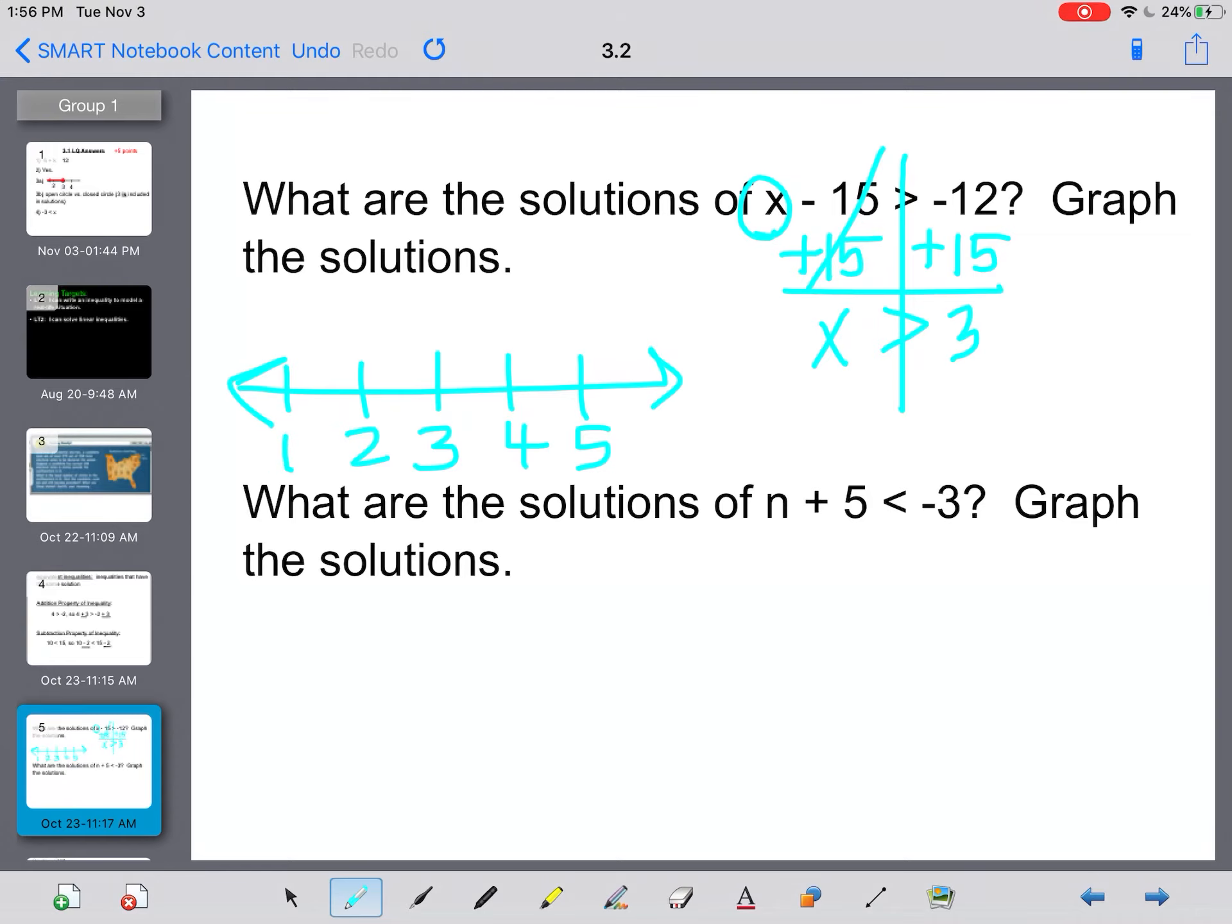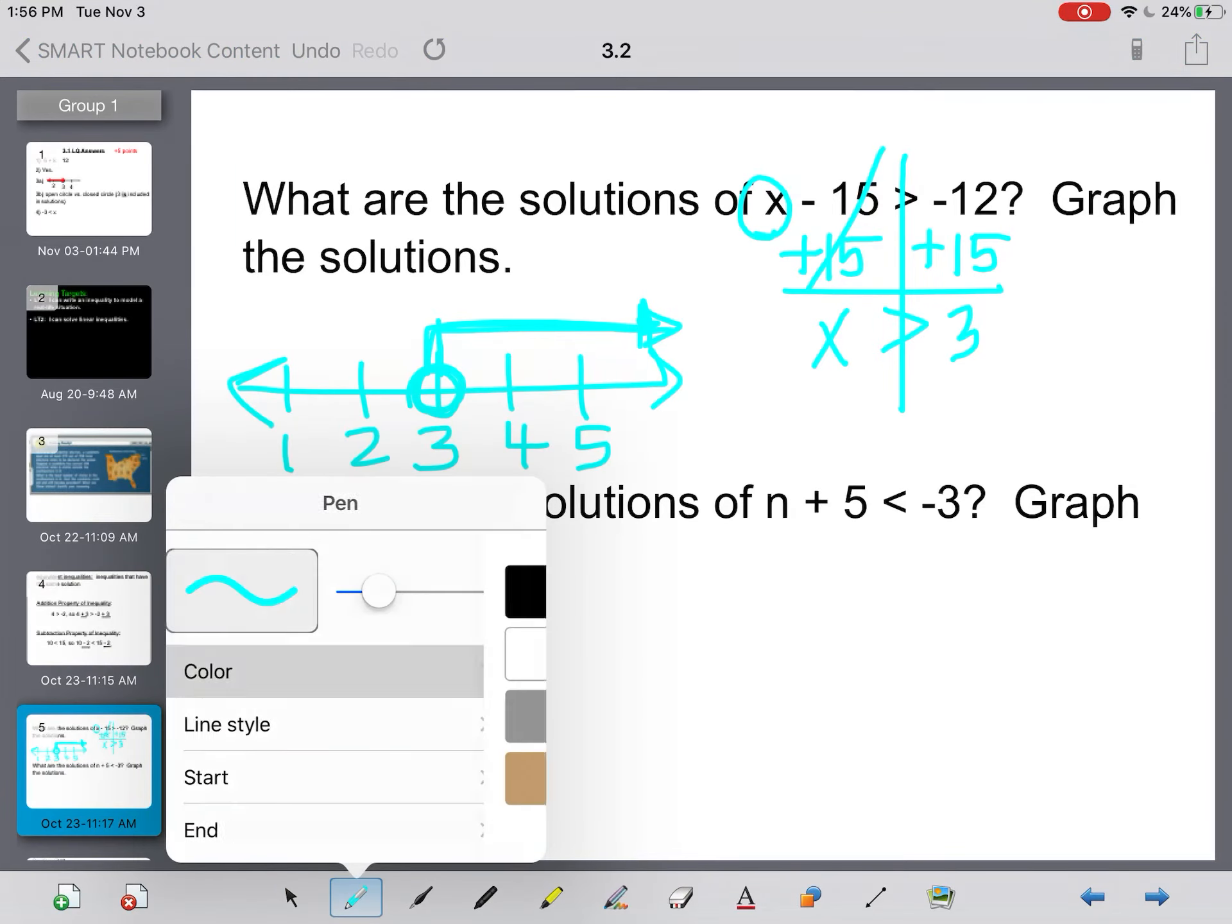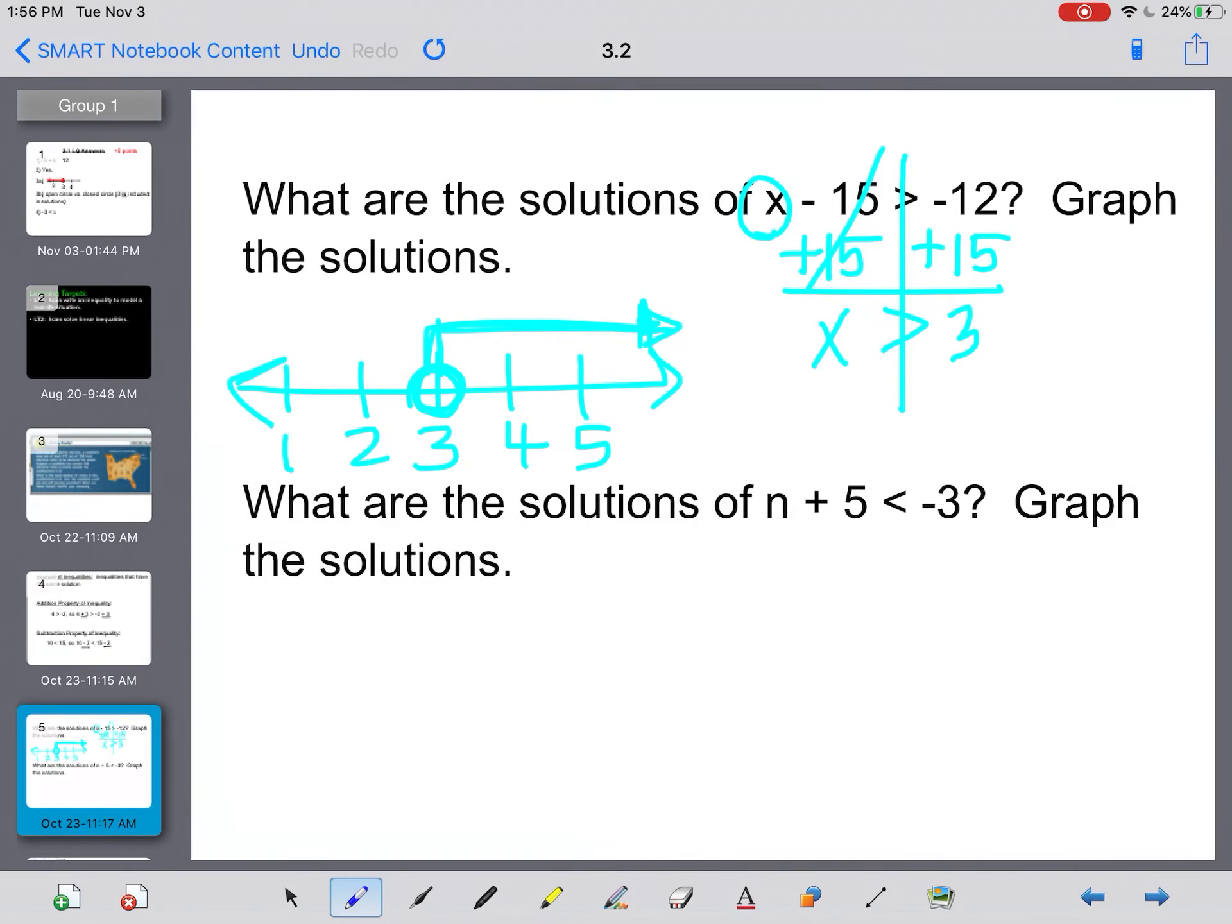When I graph it, I need the number 3 and at least a couple more. Because it has no equal to bar, I'm going to have an open circle at 3. And my x's have to be greater than 3, so everything I shade has to be greater than 3. So I'm going to shade to the right.